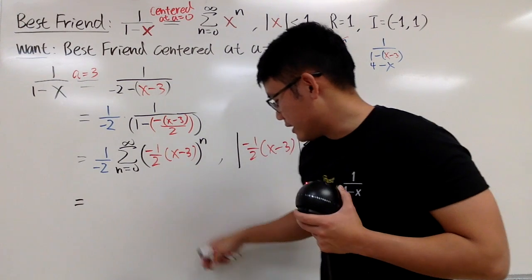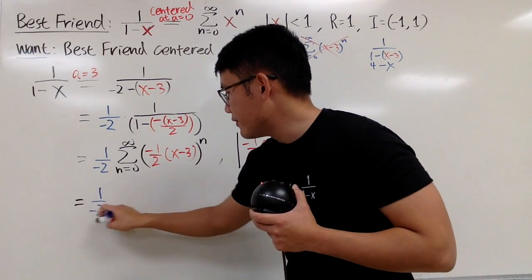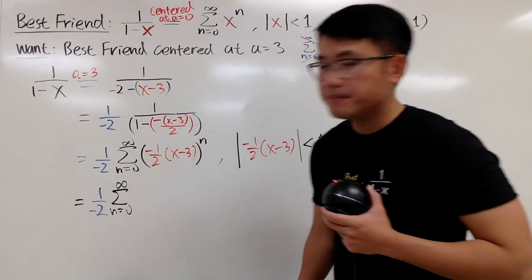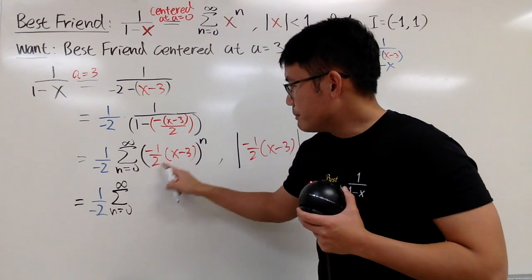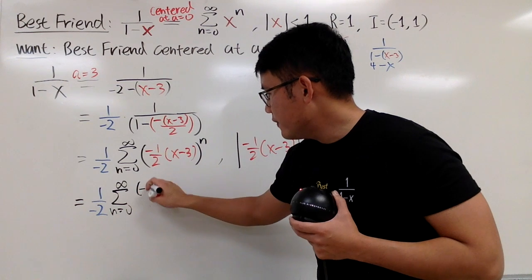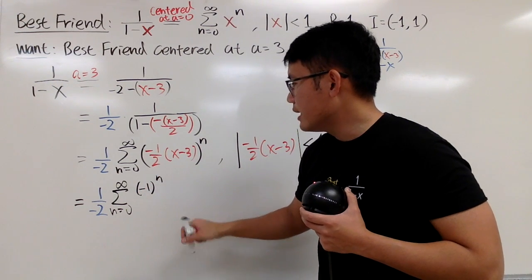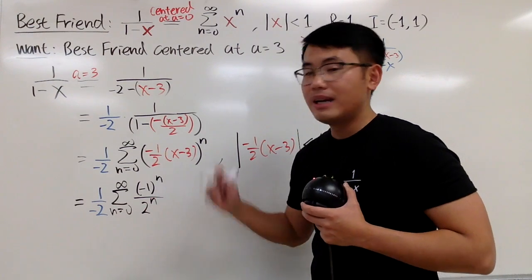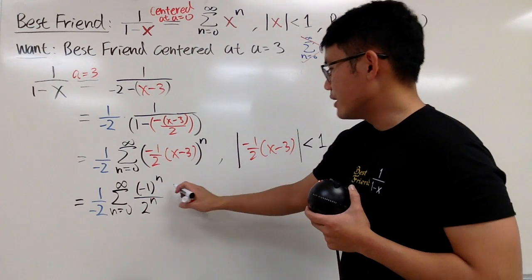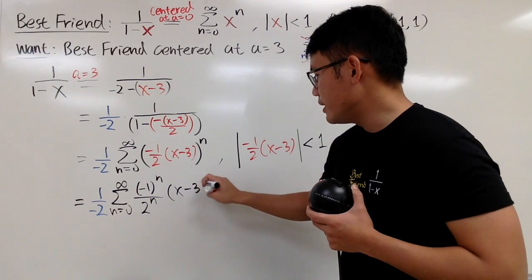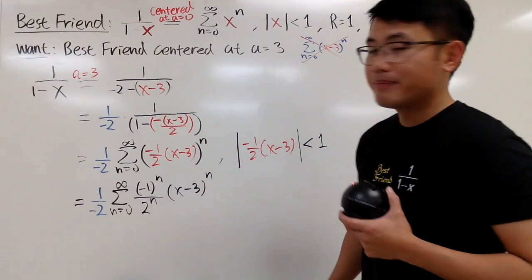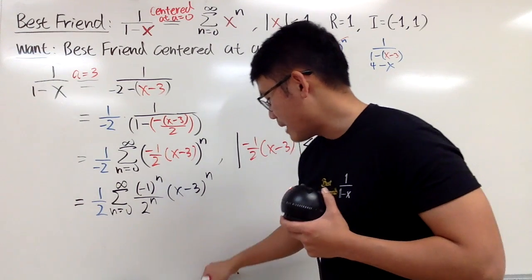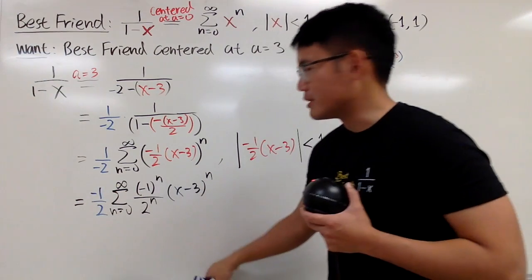So, let's focus on this right here. First, we have 1 over negative 2. And then this is the sum as n goes from 0 to infinity. For this part, let me write it as negative 1 to the n's power, right? And then we have over 2 to the n's power like this. And then this right here is just parentheses, x minus 3, raised to the n's power. And just for simplicity purposes, maybe I'll bring the negative to the top, because this will match the numbers better.